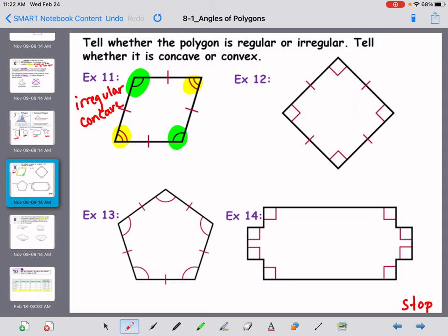Example twelve: are all the sides the same? Yes. Are all the angles the same? Yes. So this would be regular and concave.